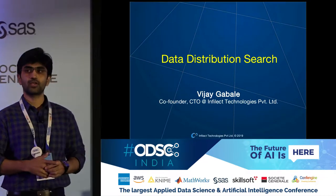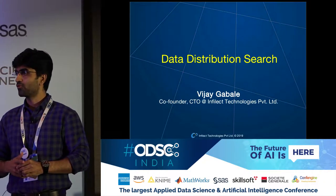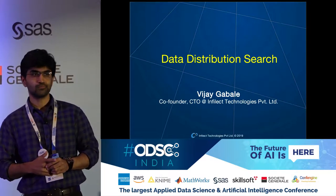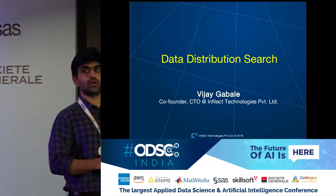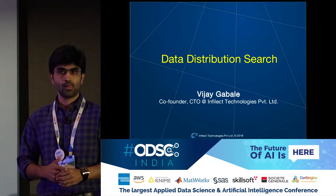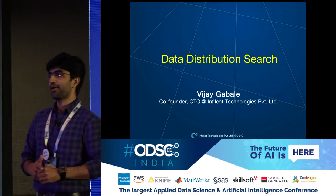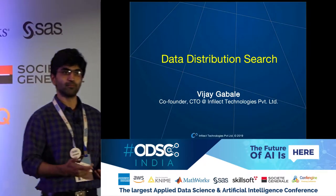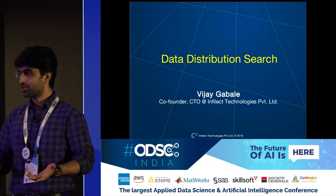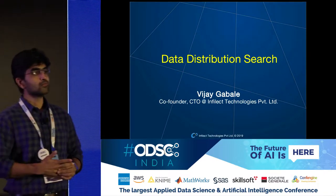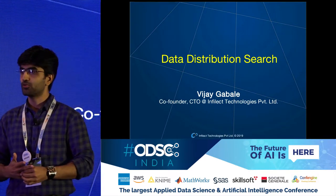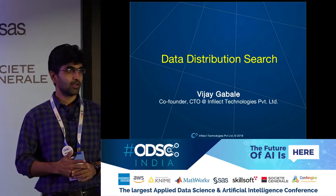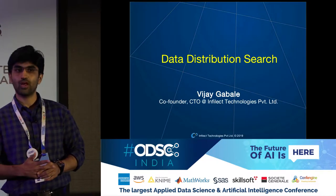Before I begin, a quick show of hands — how many of you are deep learning engineers? How many of you work on computer vision problems? So all of us know that in the deep learning stack, we have three main building blocks: datasets, algorithms, and architectures. If I ask you to rank these three things from most important to least important, how many of you would have architecture at the top? How many would have algorithm at the top?